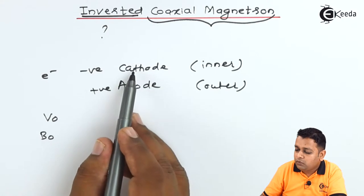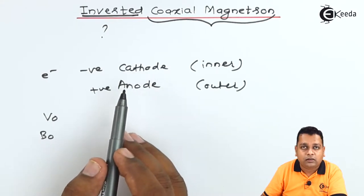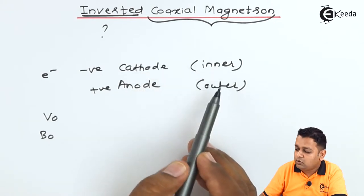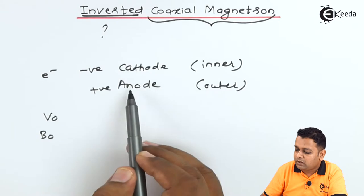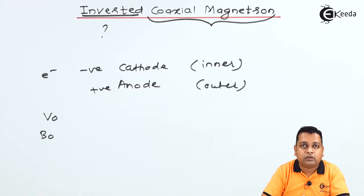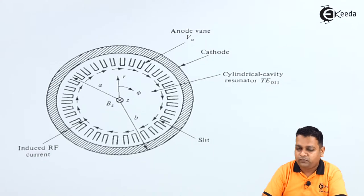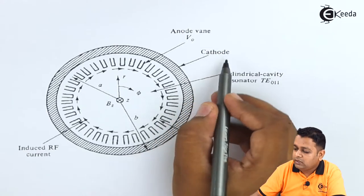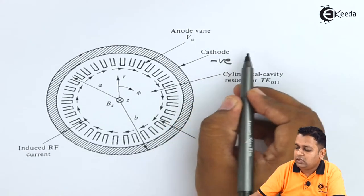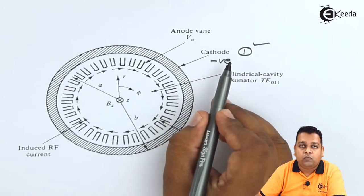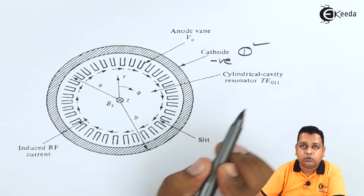Now as the positions of the cathode and the anode are inverted, the cathode becomes the outer electrode and the anode becomes the inner electrode. Let us see how the diagram for the inverted coaxial magnetron looks. The very important electrode — the cathode, which is negatively charged — is of great significance; without it we cannot start operation of this device.